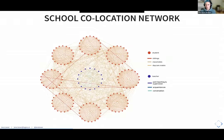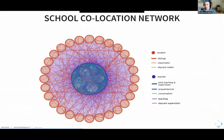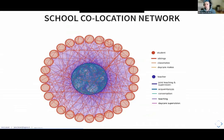Teachers also have contacts amongst each other, either through jointly teaching or supervising a group of students, being acquaintances at work, or having work meetings. And there are all the connections between teachers and students caused by a teacher teaching a class or supervising a daycare group. What you see here is the contact network of a typical Austrian primary school with afternoon daycare — eight classes with an average of 19 students each. This for comparison is the contact network of an average Austrian secondary school, and you can appreciate it looks very different: way more students, more classes, more teachers, and more contacts between teachers and students because several teachers teach the same class, whereas in primary schools mostly one teacher teaches a given class.